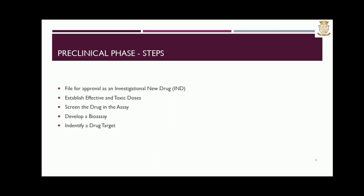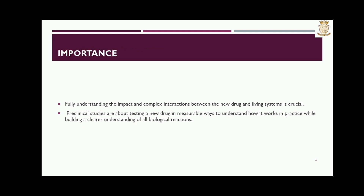Steps of the preclinical phase include: file for approval as an investigational new drug, establish effective and toxic doses, screen the drug in the assay, develop a bio-assay, and identify a drug target. Fully understanding the impact and complex interactions between the new drug and living systems is crucial. Preclinical studies are about testing a new drug in measurable ways to understand how it works in practice while building a clearer understanding of all biological reactions.